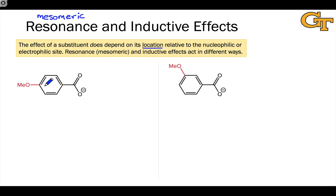Here we have a para-substituted methoxybenzoate, and here we have a meta-substituted methoxybenzoate. Let's start by asking about the inductive and resonance effects in these molecules.